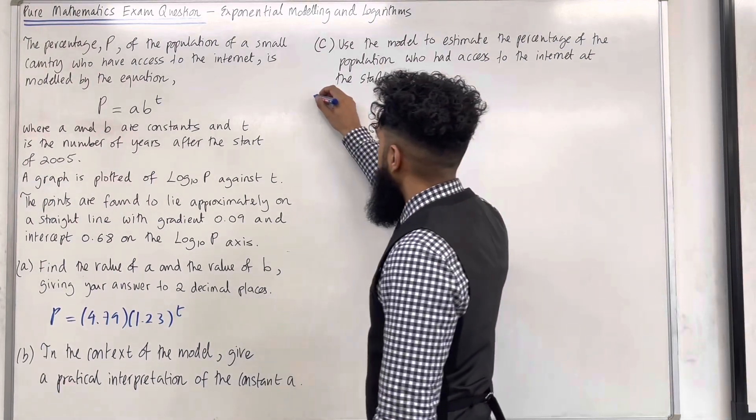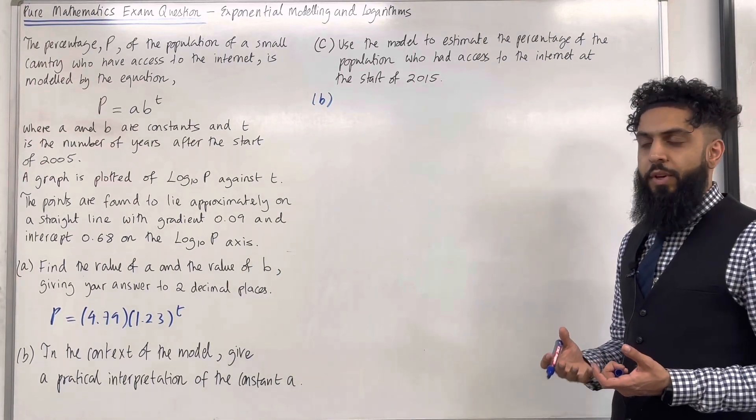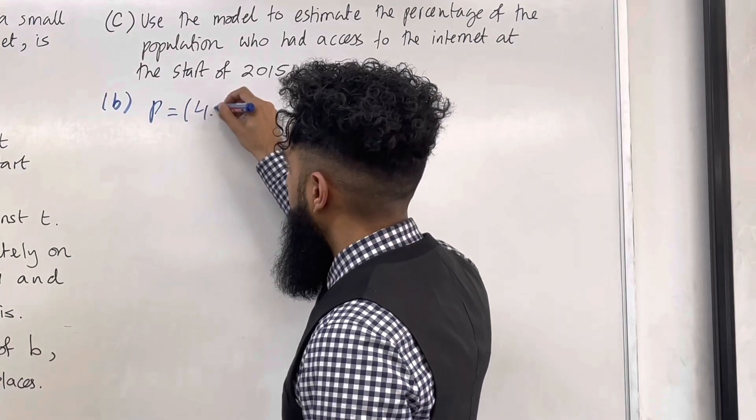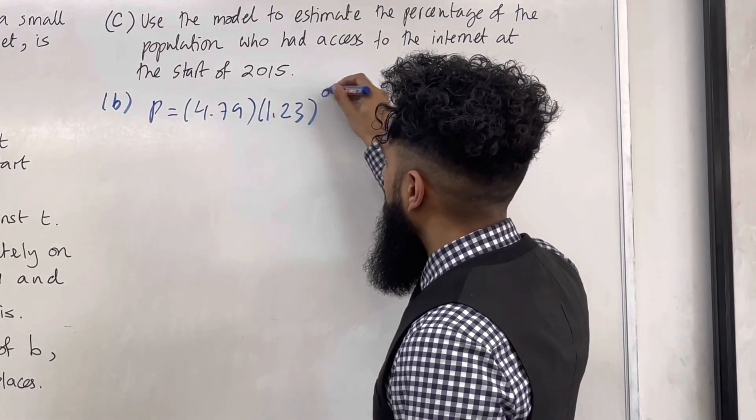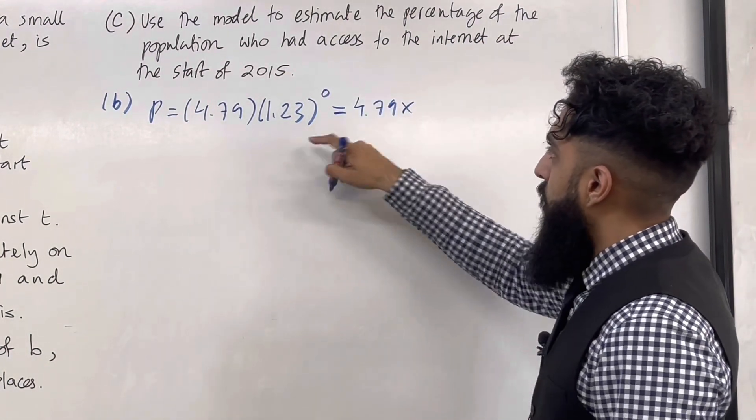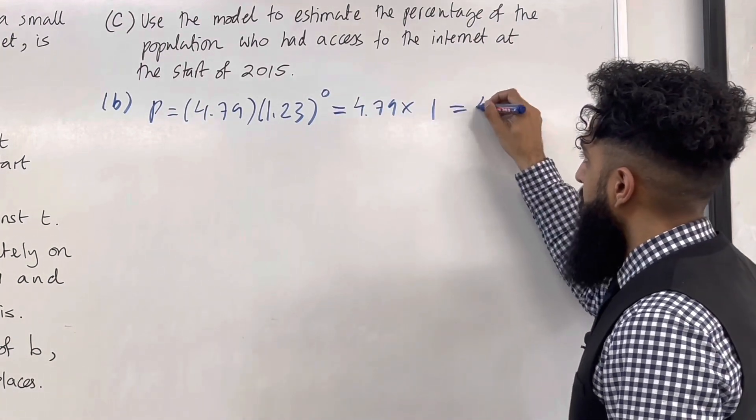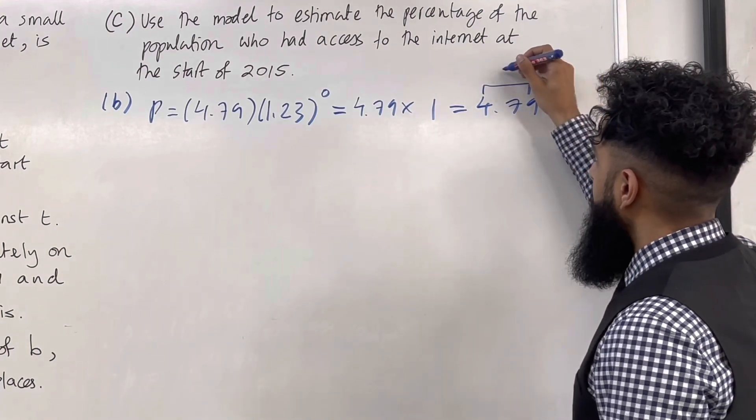Let's have a look at the solution to part B. I'm going to start by substituting T equals 0 into my model. So this gives me P equal 4.79 multiplied by 1.23 to the power 0. This in turn gives me 4.79 multiplied by 1, because 1.23 to the power 0 is 1.